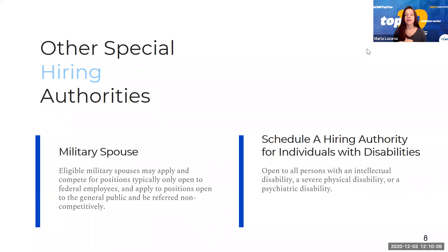The Schedule A hiring authority is for individuals with disabilities — specifically those with intellectual, severe physical, or psychiatric disabilities. This can be outside of the normal USAJOBS hiring process, and only a Schedule A letter would be required. We did just complete an entire webinar on all of these special hiring authorities, which will be on our YouTube channel probably by tomorrow. So feel free to visit the CMS YouTube channel if you fall into any of these categories.